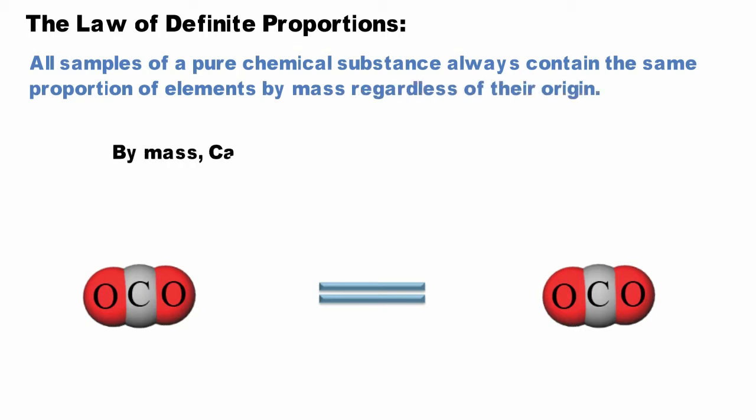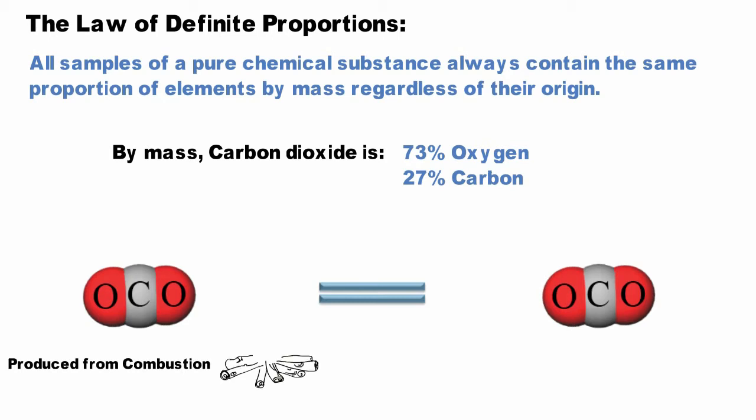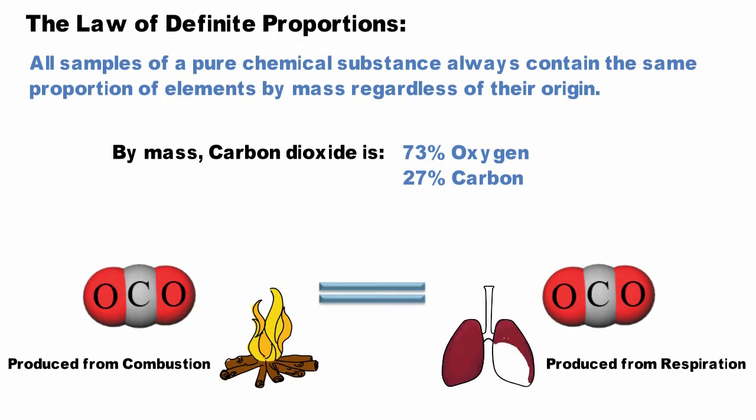By mass, carbon dioxide is 73 percent oxygen and 27 percent carbon. The law of definite proportions implies that irrespective to production either by combustion or respiration, all carbon dioxide is chemically the same in every location.